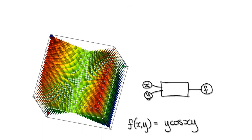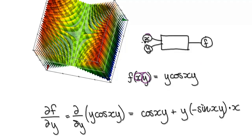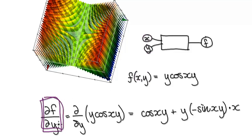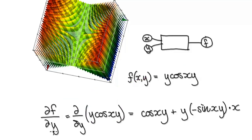Let's work through some partial differentiation examples. We've got a surface with x and y as independent variables. We're going to try and partially differentiate this function with respect to y.